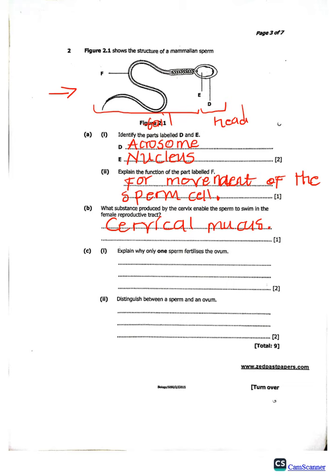Question C roman number one: explain why only one sperm cell fertilizes the ovum. If we have maybe thousands or billions of sperm cells approaching one ovum, why should only one fertilize it? We want the zygote — the fertilized egg — to have only one set of chromosomes. For a person to be normal, he or she must have the correct pair of chromosomes.